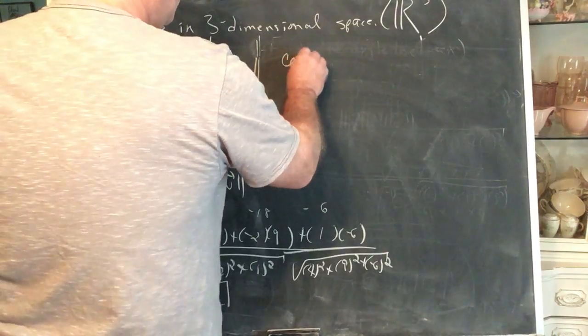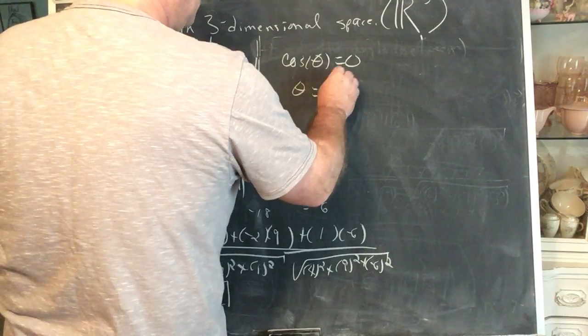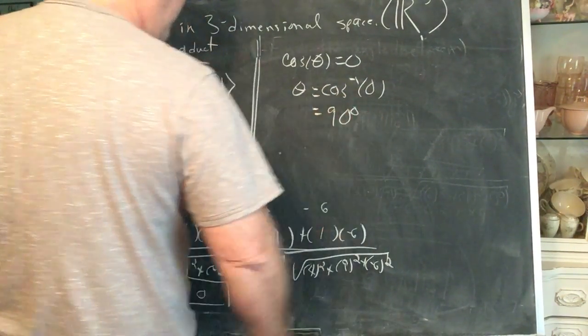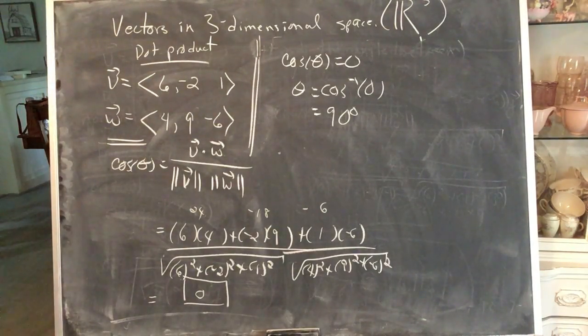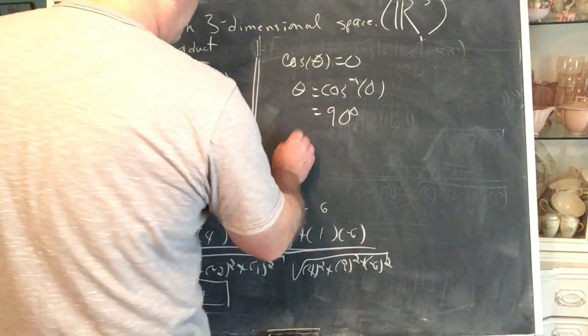So we have cosine theta is equal to zero. So theta is cosine inverse of zero. And that's 90 degrees. And do we remember the word? Yes we do, orthogonal.